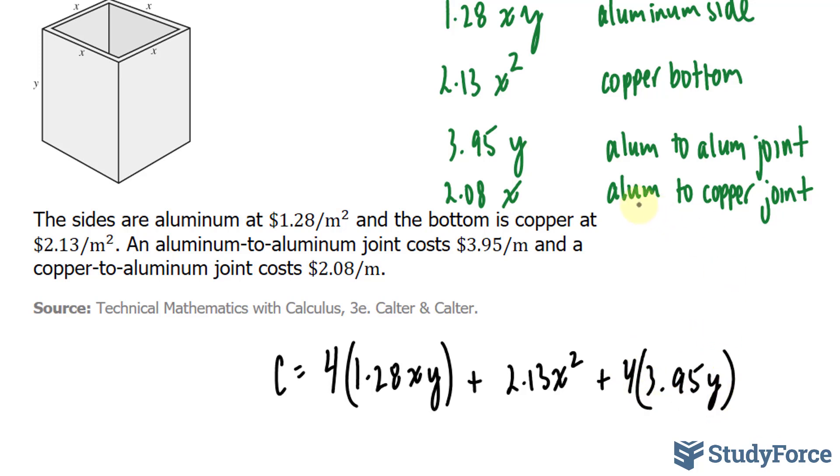And lastly, the aluminum to copper joint, we also had 4 of those—1, 2, and 2 that you can't see. We'll multiply the cost of 2.08 by 4.